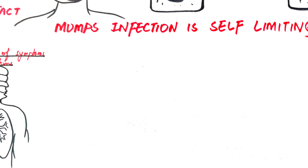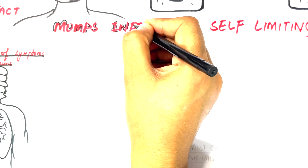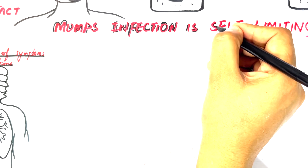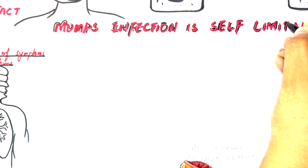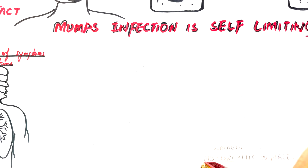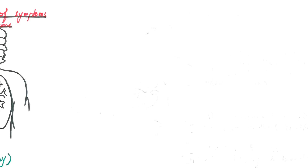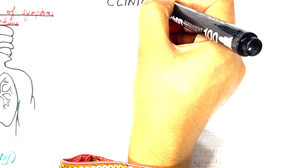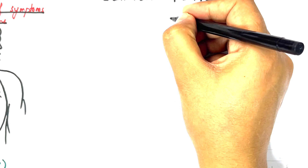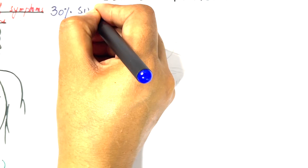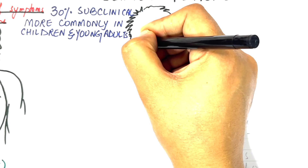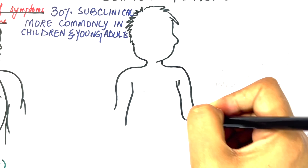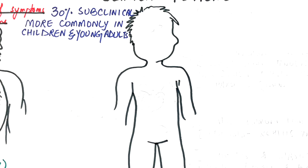Mumps infection is usually self-limiting, which means that the disease comes to an end after the immune system clears the infection. About 30% of mumps infections are subclinical, meaning no signs and symptoms can be observed. The disease occurs more commonly in children and young adults.